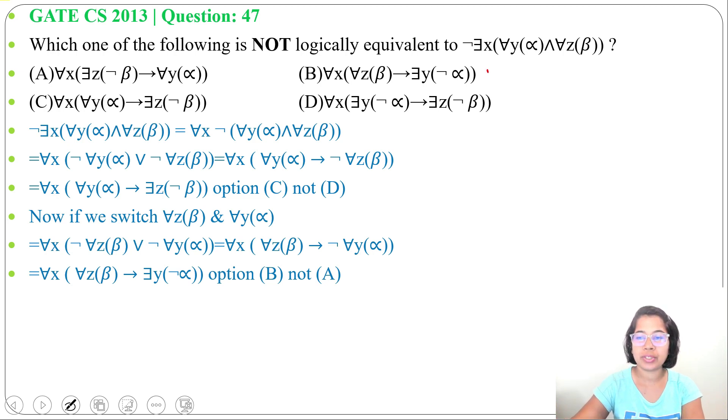It's present in option B, not in option A. Option A and option B are beta implies alpha. That's why I switched these two to find beta implies alpha.